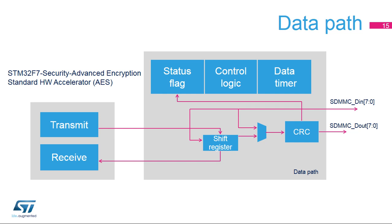The datapath transfers data both to and from the SD, SDIO, or MMC card. On each SDMMC_CK clock cycle, the datapath can send 1, 4, or 8 bits depending on the bus width configuration. Transfer logic is clocked by the SDMMC_CLK clock. It is divided into two subunits: one for data sent and one for data received, with dedicated control bits and status flags. The data buffer is not part of the datapath; transmit and receive FIFO logic are mapped in the APB domain.